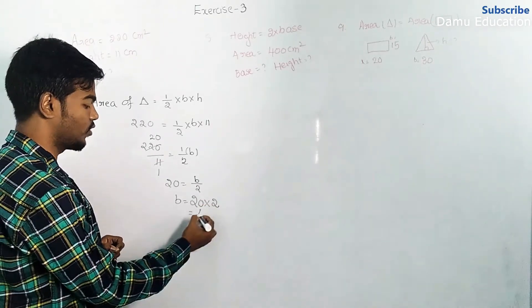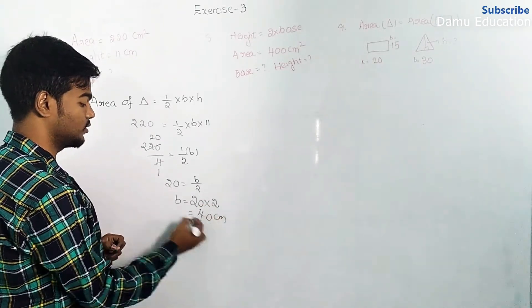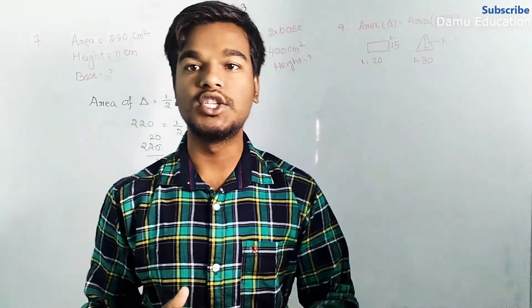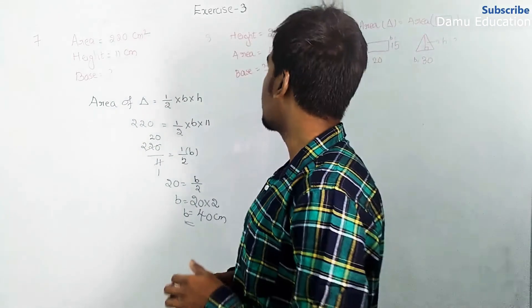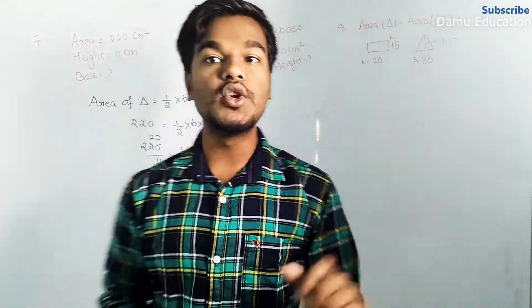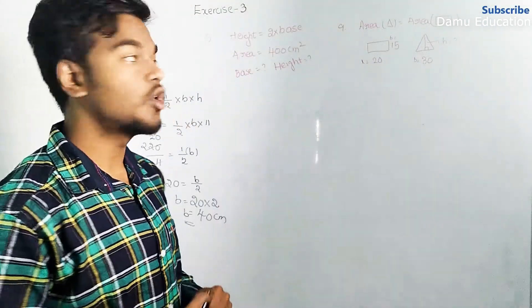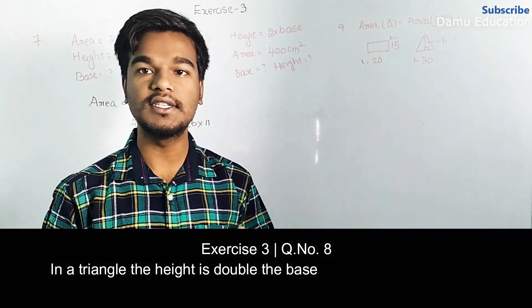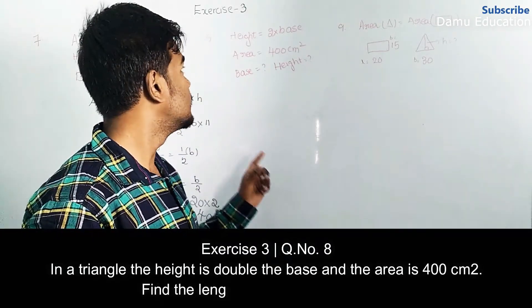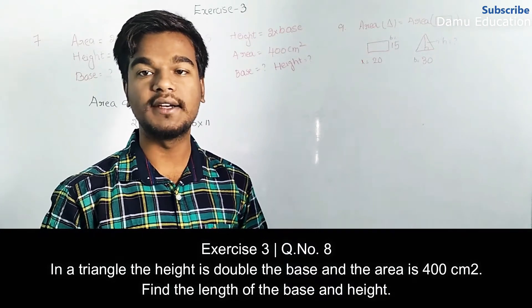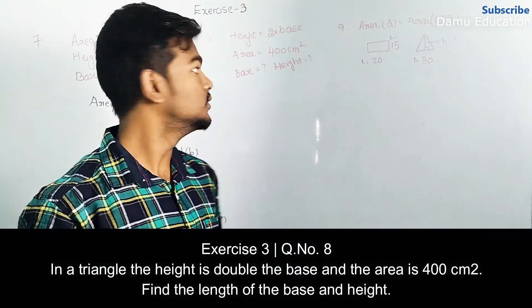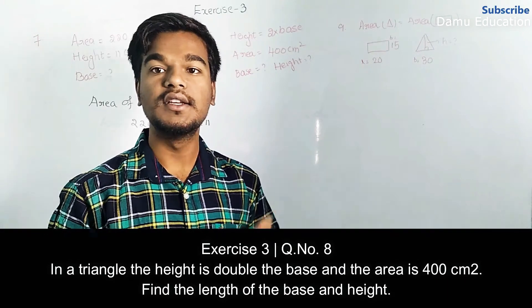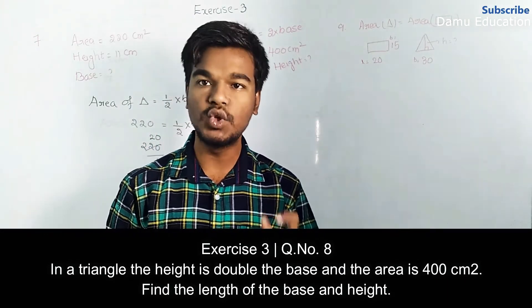So base equals 20 into 2, which is 40 centimeters. The base is 40 centimeters. Next is question eight, where the height is double the base, and the area is given as 400 centimeter square. We need to find the base and height.